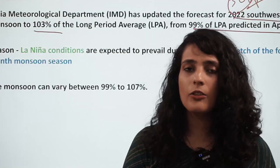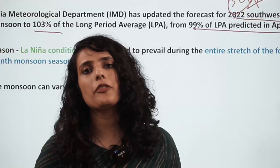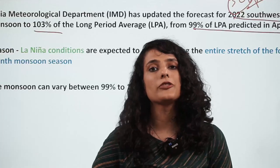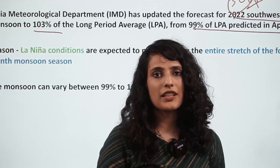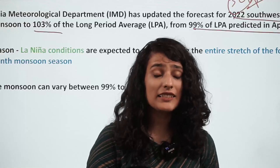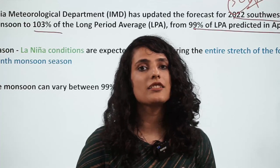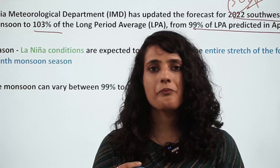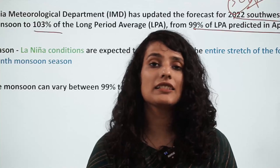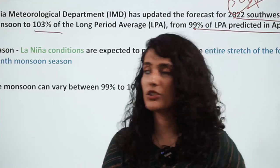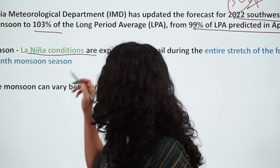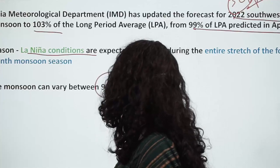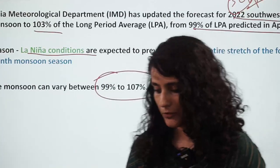The reason is La Nina conditions. When La Nina prevails, it means the Indian Ocean region is much warmer than before. A warmer Indian Ocean region results in a good southwest monsoon for our country. El Nino conditions are harmful to the Indian monsoon, but La Nina always brings good news. Monsoon can vary between 99 to 107% of LPA.